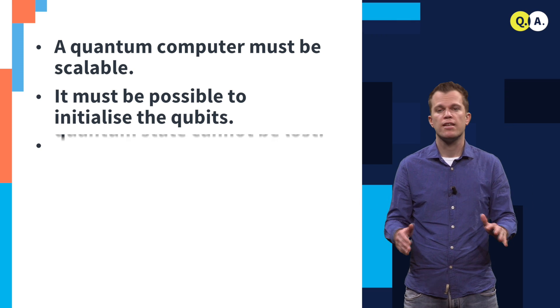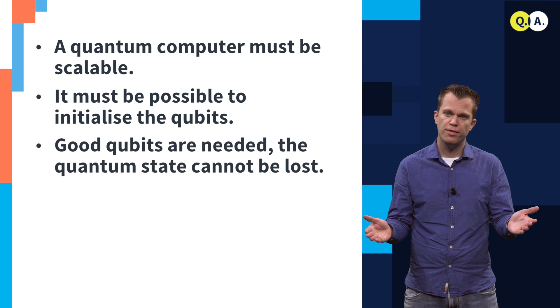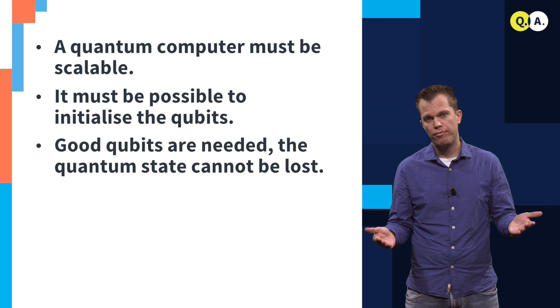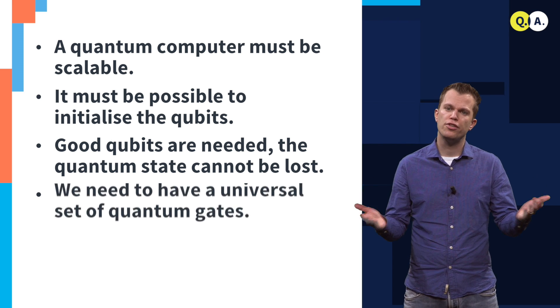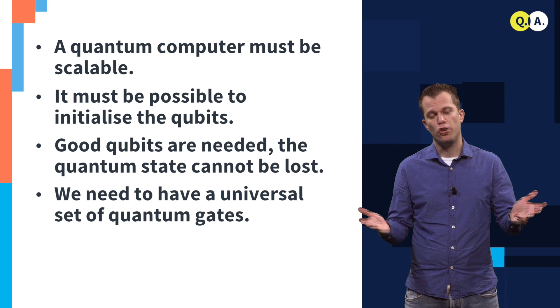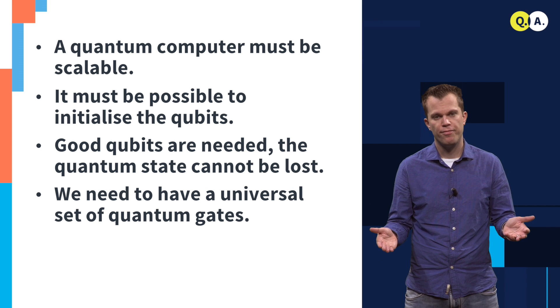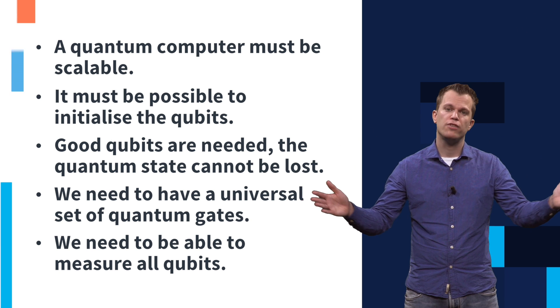Third, good qubits are needed. They need to have a long quantum coherence to make sure that the quantum state is not lost. It is furthermore required to have what is called the universal set of quantum gates, meaning that one can do the operations needed to execute the quantum algorithm. And finally, we need to be able to measure all of those qubits.